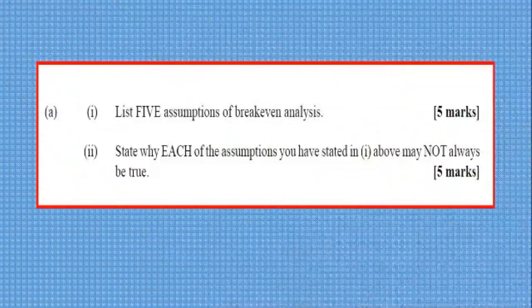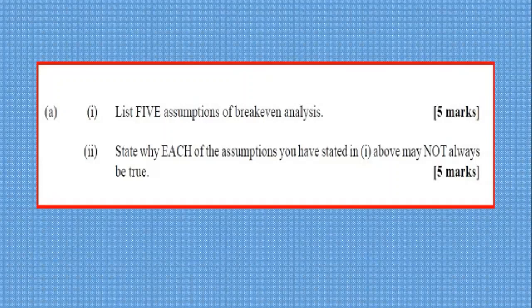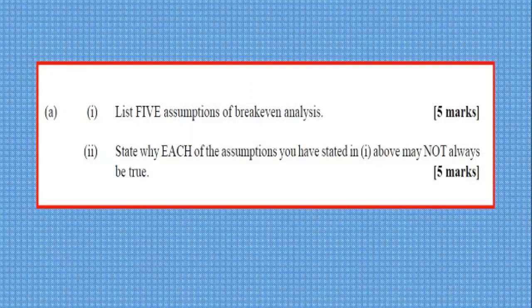The problem, the question is the first part, part A: list five assumptions of break-even analysis for five marks. And part two of part A, state why each of the assumptions you have stated in part i above may not always be true. And you have ten marks for that.